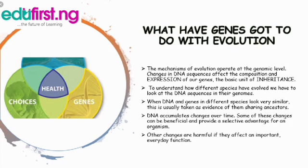To understand how different species have evolved, we have to look at the DNA sequences in their genomes. When DNA and genes in different species look very similar, this is usually taken as evidence of them sharing ancestors. DNA accumulates changes over time; some of these changes can be beneficial and tend to provide a selective advantage for an organism, while other changes are harmful if they affect an important everyday function.